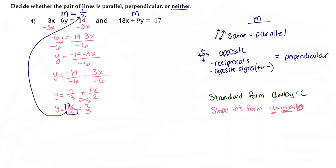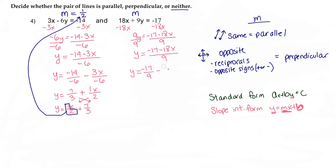Now let's take a look at the slope for our second equation. The first thing I'm going to do is subtract 18x from both sides. That's going to leave me with 9y equals negative 17 minus 18x. Then I'm going to divide by 9 on both sides, leaving me with y equals negative 17 minus 18x over 9. Then I'm going to split my denominator: y equals negative 17 over 9 minus 18x over 9. I can't simplify negative 17 over 9, so I'll just rewrite that.